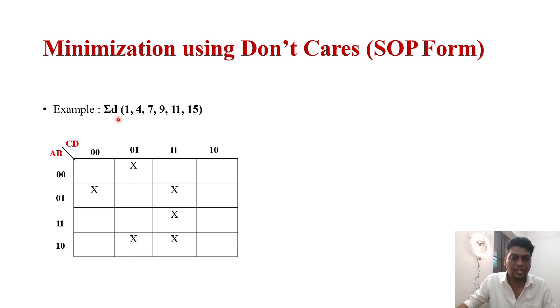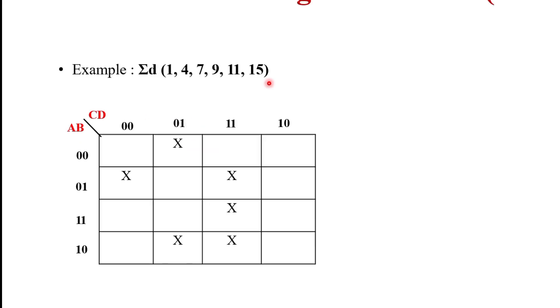Summation d (ΣD) represents SOP with don't care. Whenever we are given the summation d symbol, all the numbers should be included in the K-map cells. As the maximum value is represented as 15, we assume it's a four-variable K-map, so 16 cells are formed: A, B, C, D four variables.